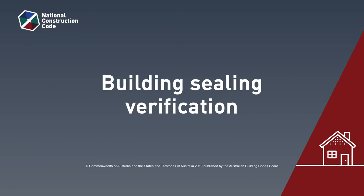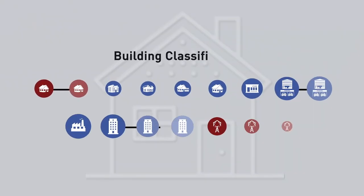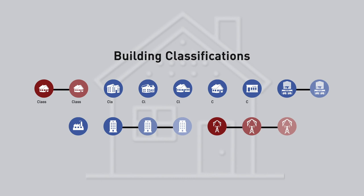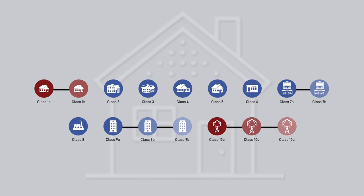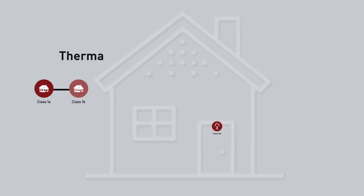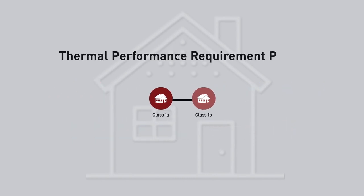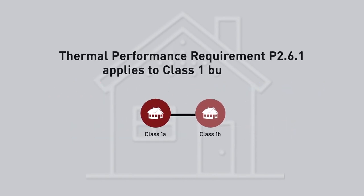The NCC is a performance-based code. It requires all houses to make efficient use of energy, particularly the energy required for cooling and or heating. An important aspect of this requirement is sealing the building envelope to minimise air leakage.